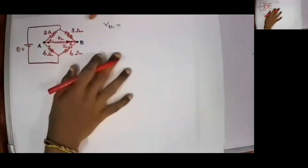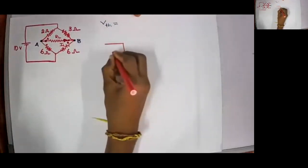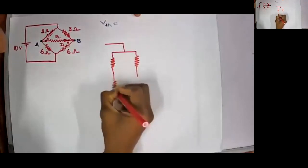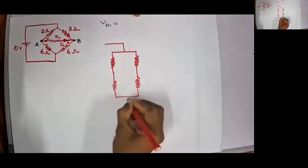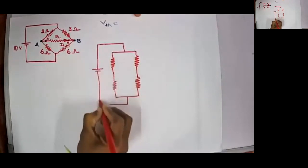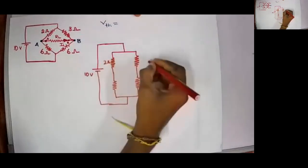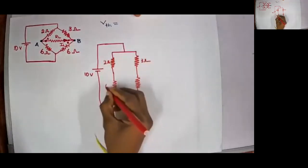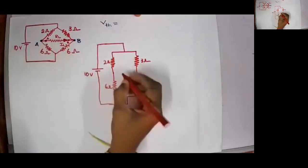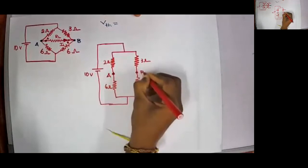So I can redraw this figure here for simplification. So this will be my simplified circuit. 10 V. So 2 ohms, 3 ohms, 6 ohms and 6 ohms. Exactly both the circuits are same. Now I have my point A here and point B here.